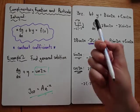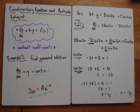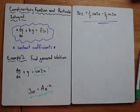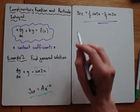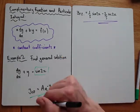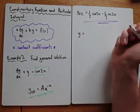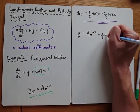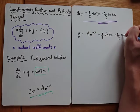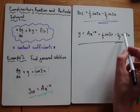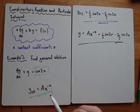We've got our complementary function, we've figured out the values for our particular integral, so we just need to write the general solution — which is simply the complementary function plus the particular integral. Notice I always denote them as CF and PI separately first. If you write y equals too early and something else happens in the question, you might forget the full solution is the combination of both. So now I write y equals: y equals A e to the minus x plus one fifth sin 2x minus two fifths cos 2x. You can check this by differentiating and substituting back in to verify you get sin 2x on the right hand side.